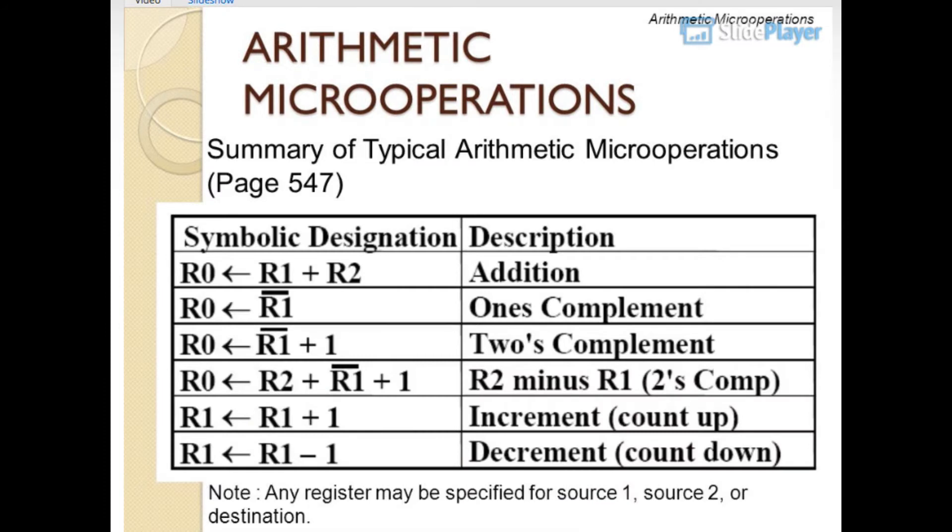Summary of typical arithmetic micro operations on page 547. Note: any register may be specified for source 1, source 2, or destination.